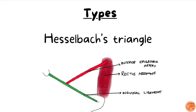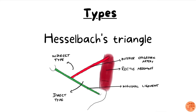Before seeing the types of inguinal hernia, we must know about Hesselbach's triangle and its boundaries. It is bounded medially by the lateral border of the rectus abdominis muscle, laterally by the inferior epigastric artery, and inferiorly by the inguinal ligament. If inguinal hernia occurs medial to the inferior epigastric artery — inside Hesselbach's triangle — it is called a direct inguinal hernia. If it occurs outside Hesselbach's triangle, or lateral to the inferior epigastric artery, it is called an indirect inguinal hernia.